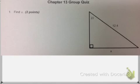Hi everybody, this is the chapter 13 group quiz. For number 1 I asked you to find x, the length of a right triangle. I have an angle, so I'm going to use one of my trig functions.